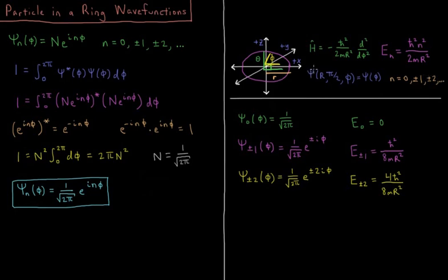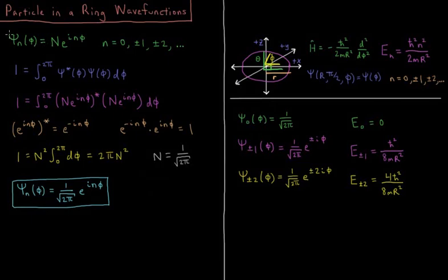The wave function in spherical polar coordinates of r, theta, and phi has a fixed radius of capital R and a fixed polar angle theta of pi over 2 (90 degrees), and is free to move in the azimuthal angle phi. So our wave function is a one-dimensional function of the variable phi. We determined that the wave function for a given quantum number n as a function of phi equals a normalization constant times a complex exponential e to the i n phi, where n equals 0, plus or minus 1, plus or minus 2, etc.